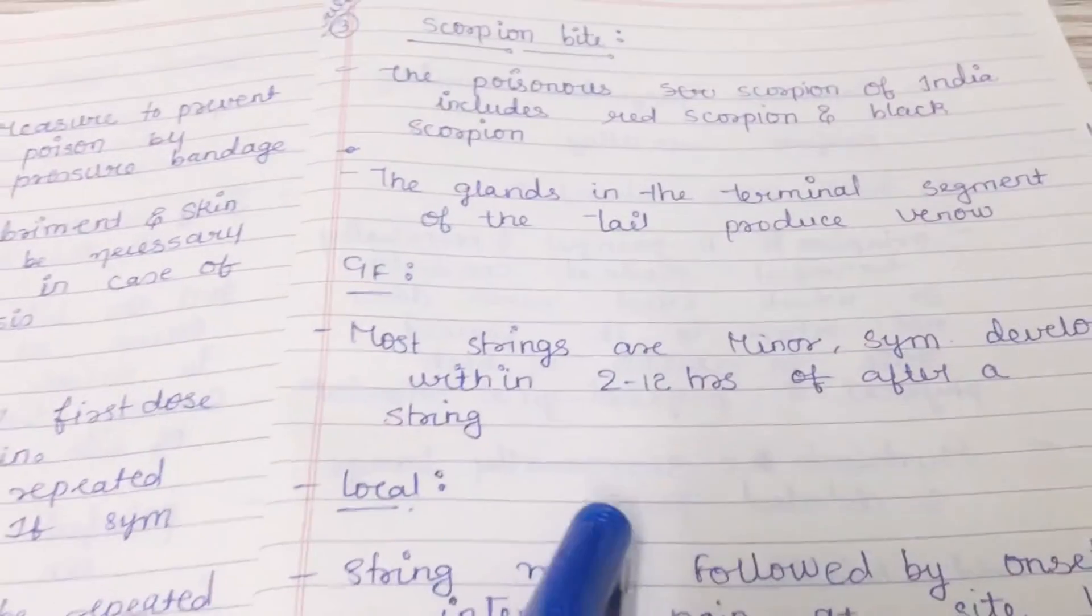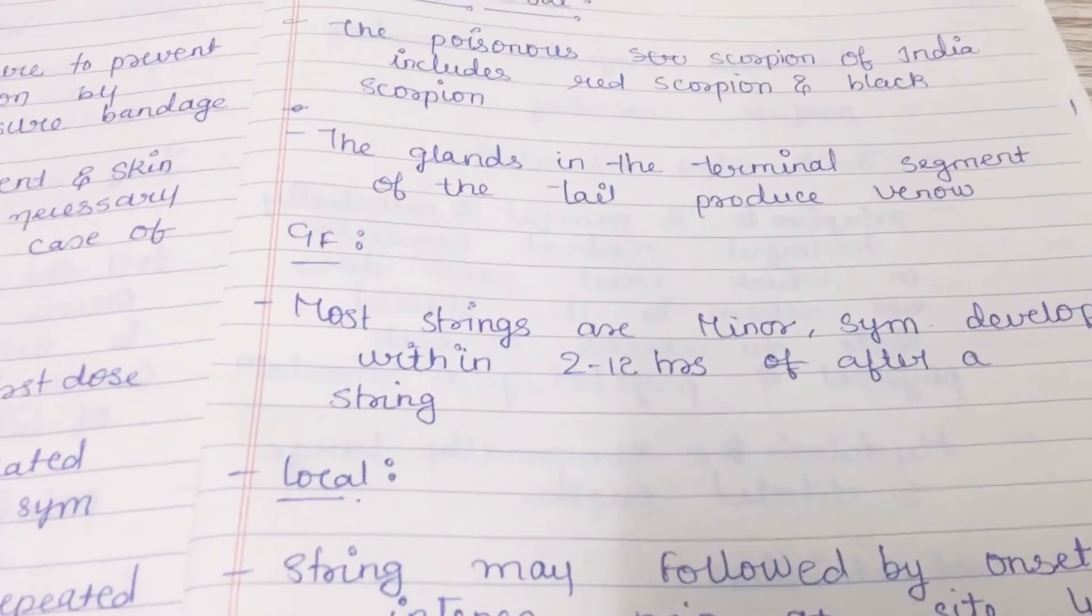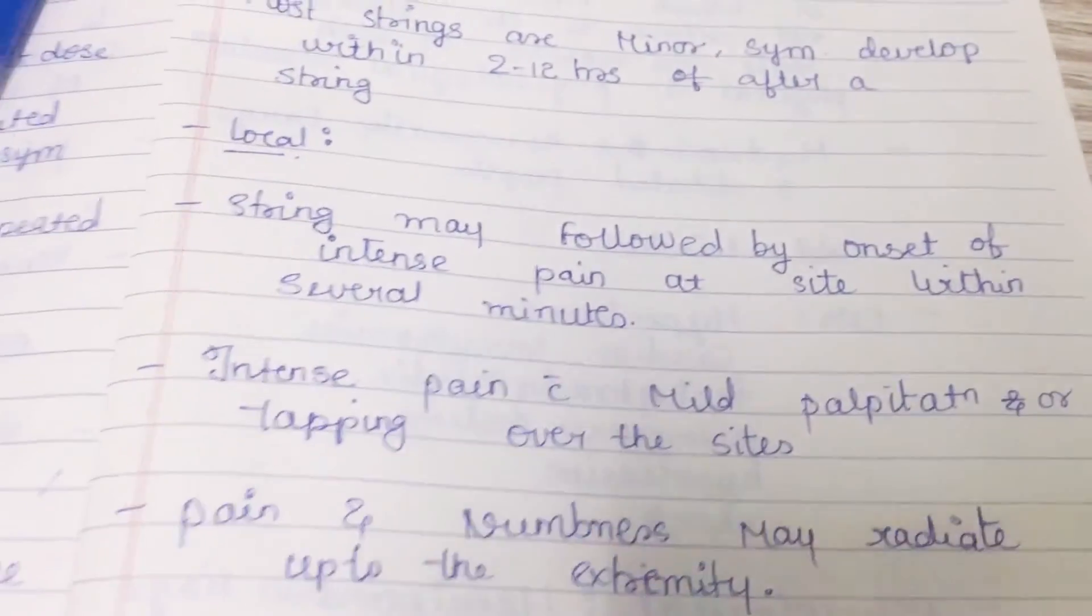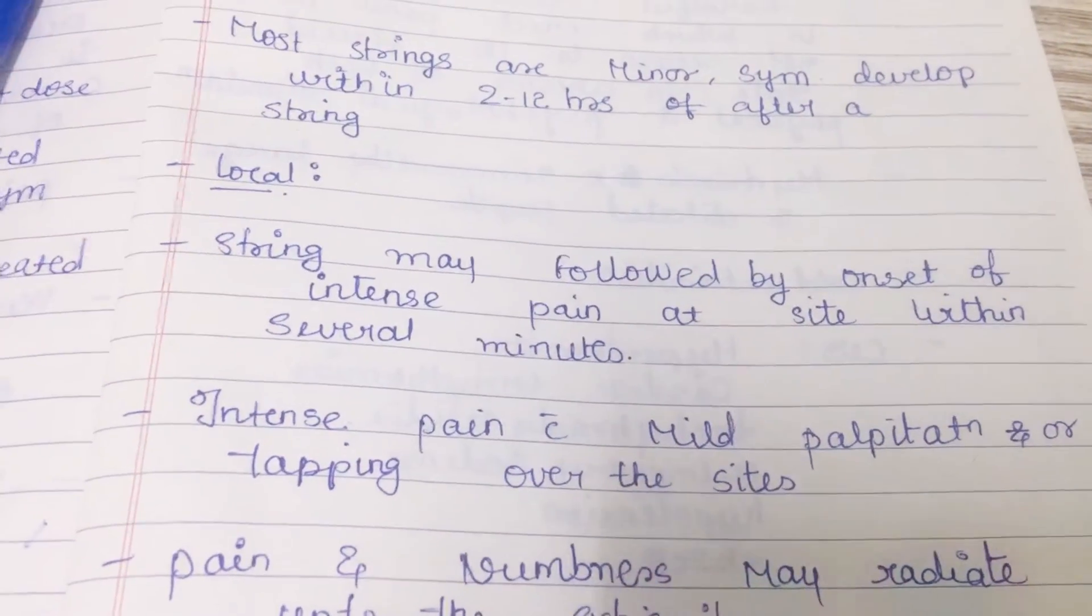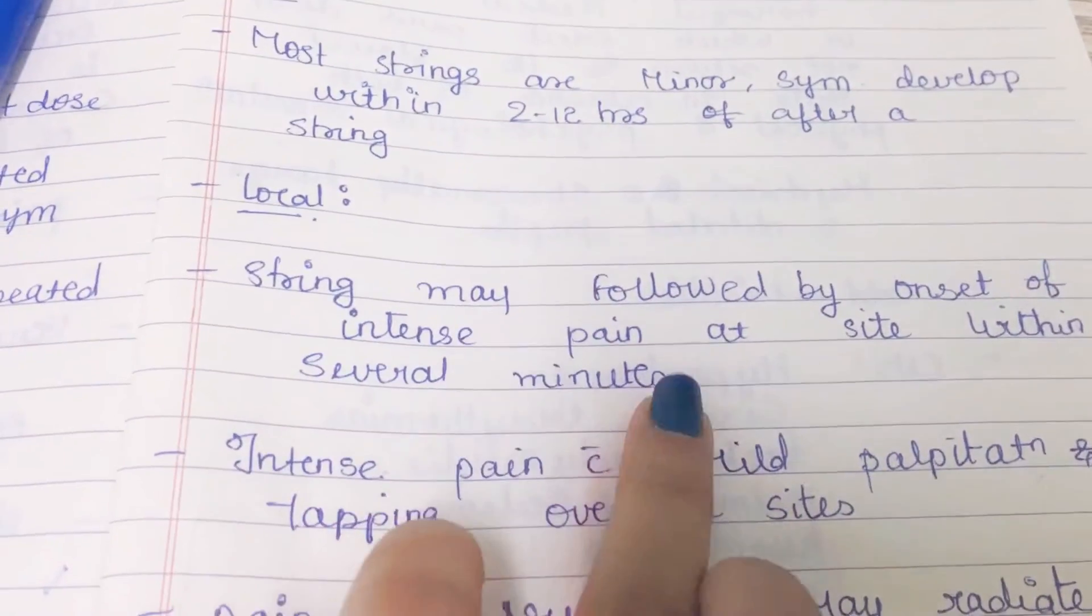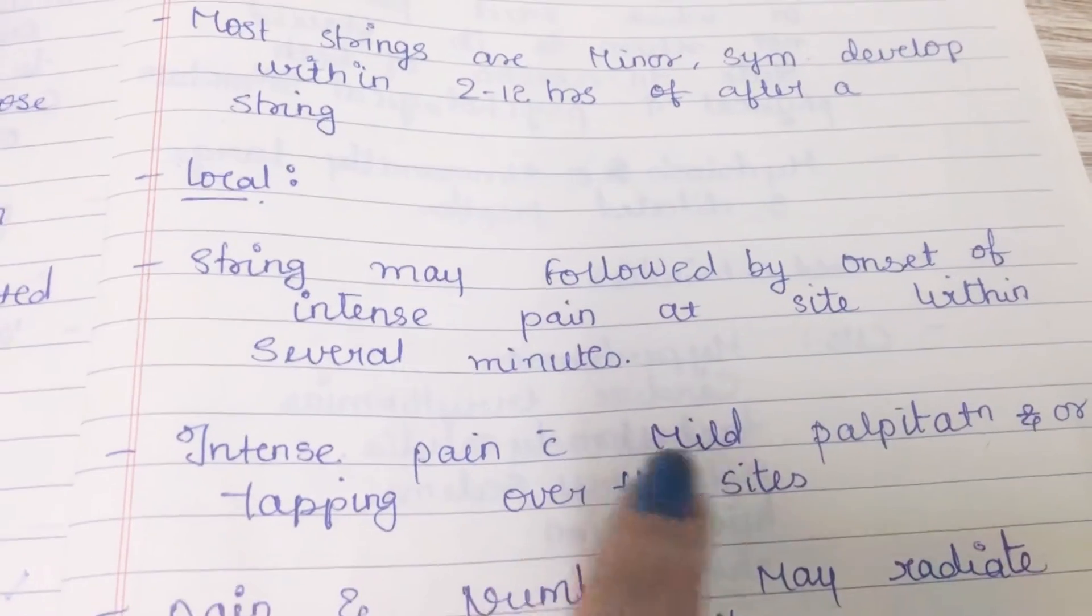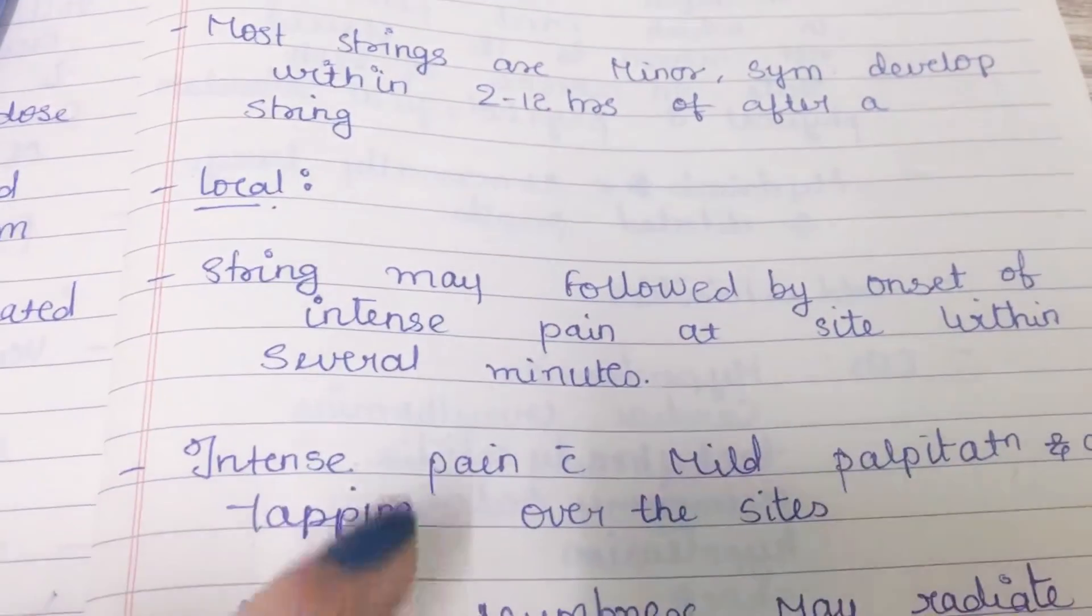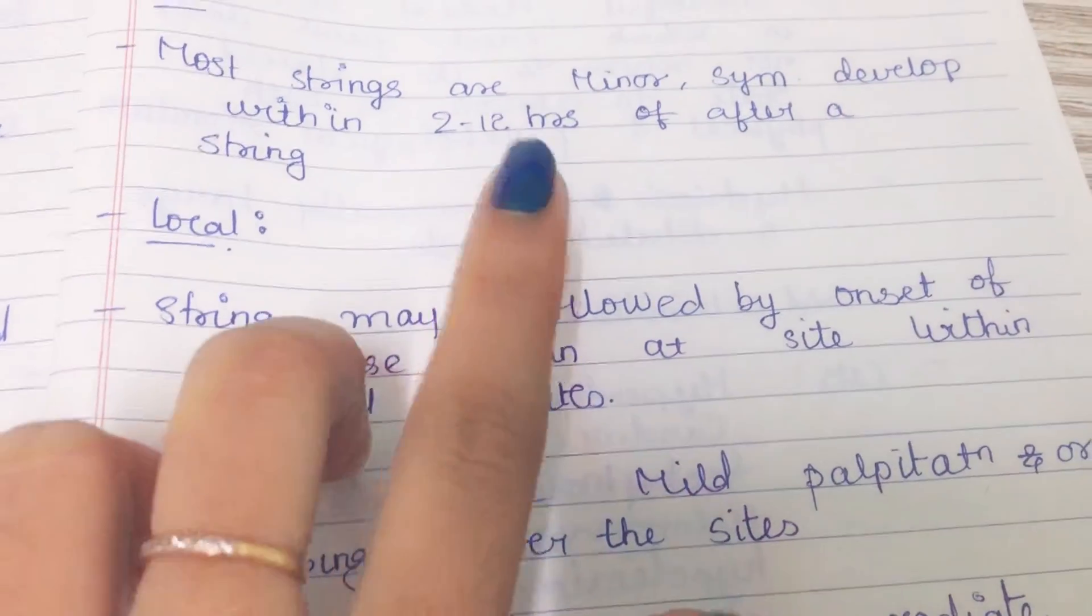The symptoms may appear within two hours to 12 hours. What are the local manifestations after the bite? Onset of intense pain persisting for several minutes. There will be intense pain with mild palpitation and tapping over the site. Three manifestations were found initially: tapping sensation, intense pain, and mild palpitation.